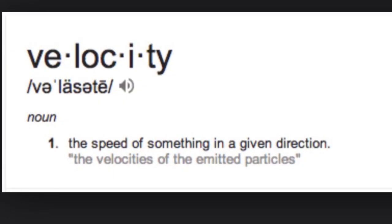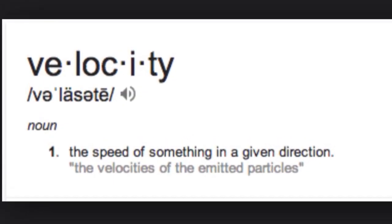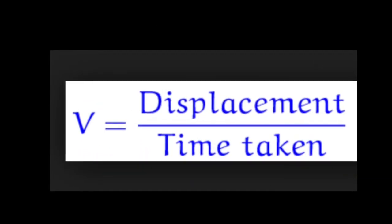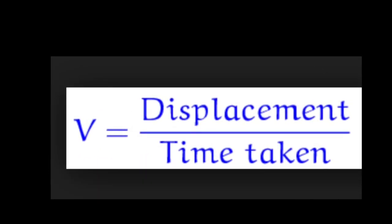The first topic we will be covering is velocity. Velocity is defined as the speed of an item in a given direction. To find velocity, you simply divide displacement by time. Here to give us more insight on velocity, here is Dawson Boyd's starting pitcher, Daniel Baldwin.